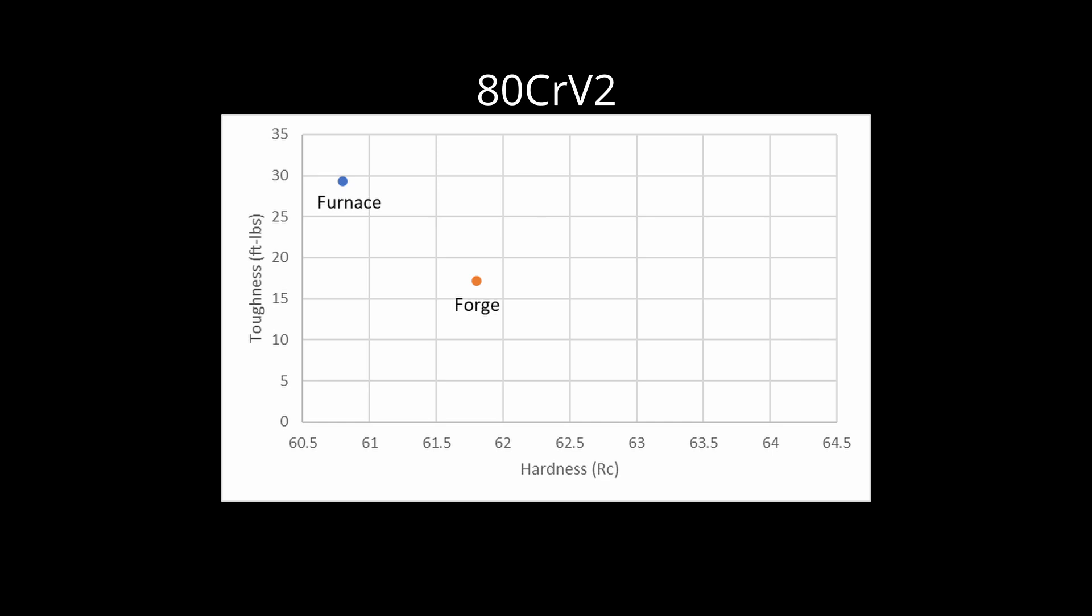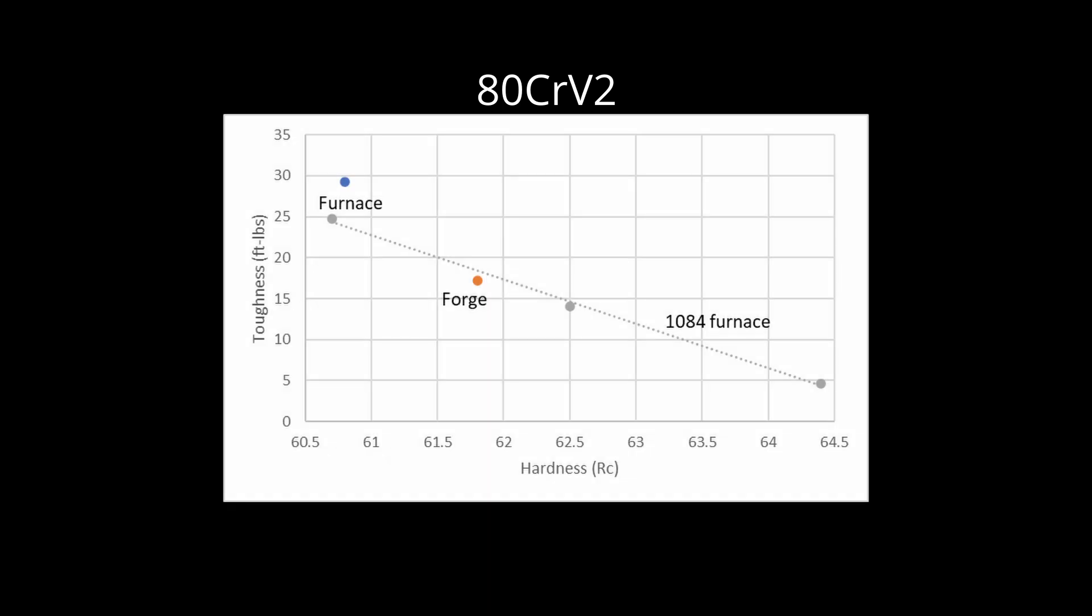80CrV2 had pretty good properties. The toughness was somewhat lower than the steel we heat treated in a furnace from the annealed condition, but the hardness was also higher. This is from higher carbon in solution because of the rapid austenitizing from the perlite condition. However, if we compare the hardness-toughness balance to furnace heat treated 1084, you see that it is very similar. So the properties of this 80CrV2 is quite good.